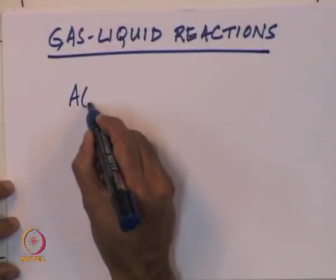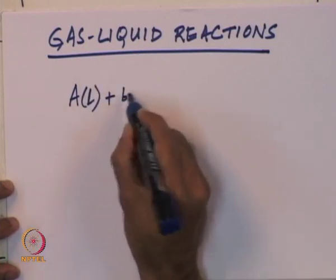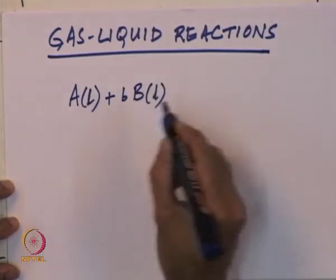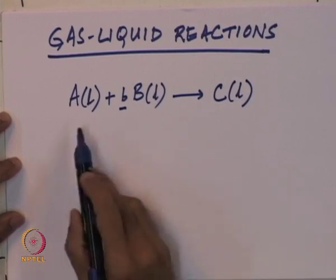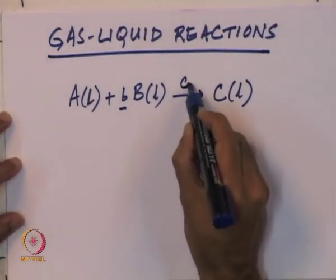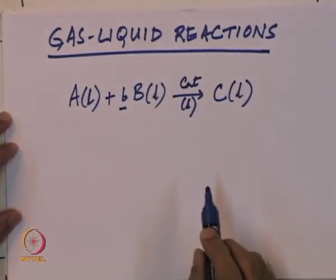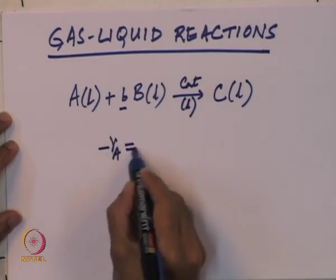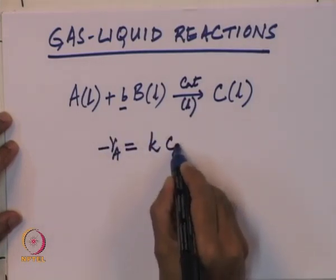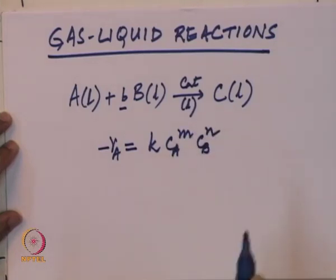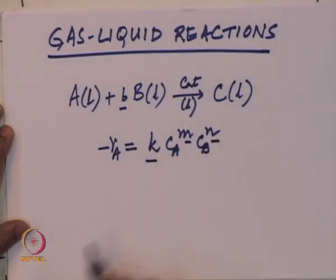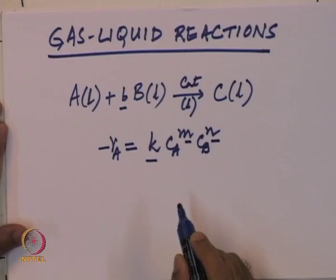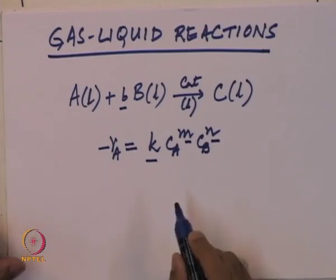Take an example such as a reaction A in the liquid phase reacting with B in the liquid phase, with b being the stoichiometric factor, giving C also in the liquid phase. This is a liquid phase reaction because reactants, product, and catalyst are all in the liquid phase. Such reactions have been seen before and are analyzed using simple rate expressions. The experiments to recover the values of k, m, and n are straightforward to set up and interpret, and the design of reactors using these rate expressions is also relatively straightforward.